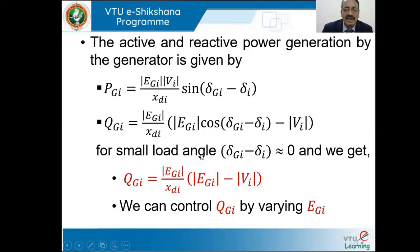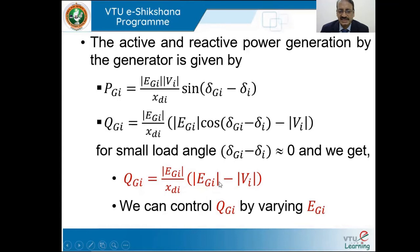For small load angles where delta_Gi minus delta_i is nearly equal to zero, we get QGi = (EGi / XDi) × (EGi − Vi). We can control QGi by varying EGi, because if Vi is constant and XDi is also constant, then QGi can be changed by changing the magnitude of EGi — that is, by changing the excitation. This will be considered in the next slide.